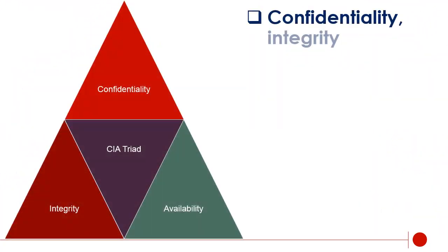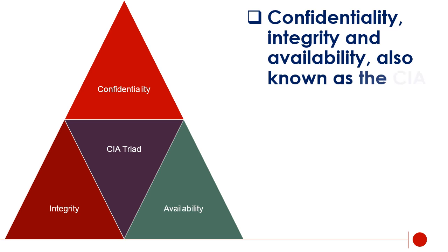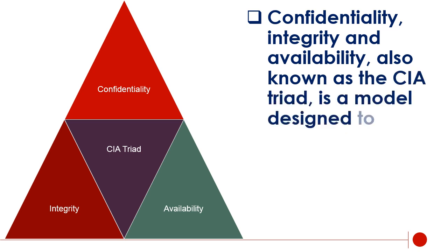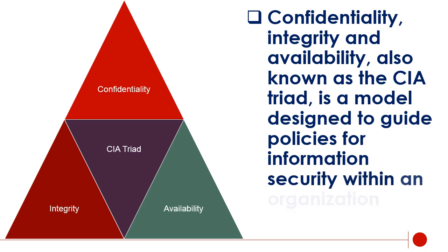Certified Information Systems Security Professional Preparation, Lecture 1. Confidentiality, Integrity, and Availability — also known as the CIA Triad — is a model designed to guide policies for information security within an organization. The elements of the triad are considered the three most crucial components of security.